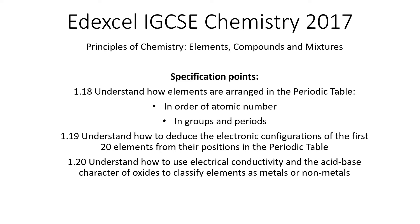Today we're looking at the Edexcel iGCSE Chemistry Specification for 2017, covering specification points 1.18 — understand how elements are arranged in the periodic table in order of atomic number and in groups and periods; 1.19 — understand how to deduce the electronic configurations of the first 20 elements from their positions in the periodic table; and 1.20 — understand how to use electrical conductivity and the acid-base character of oxides to classify elements as metals or non-metals.